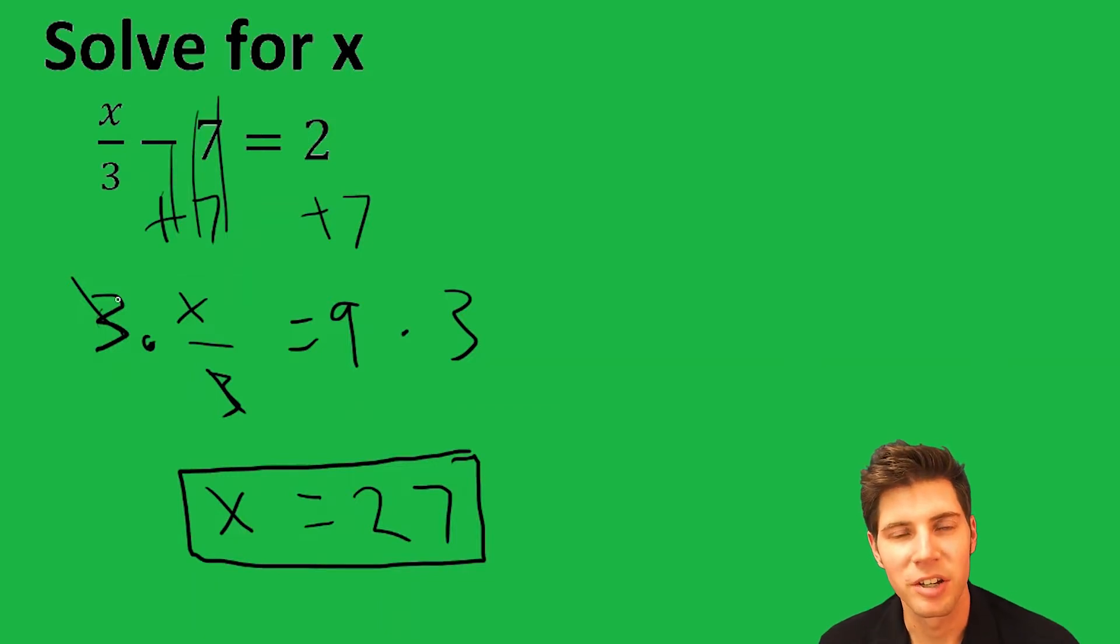So the end goal is to get x by itself, and you're always trying to undo what's being done. We had a minus 7, we added 7. We have it divided by 3, we multiplied by 3.